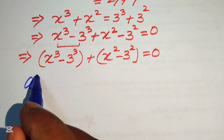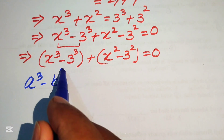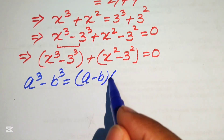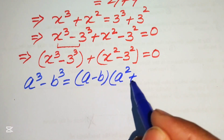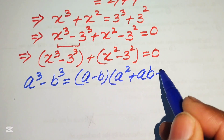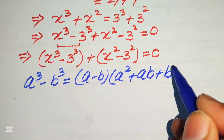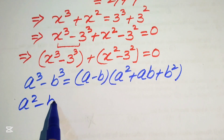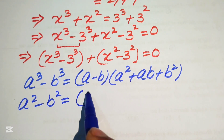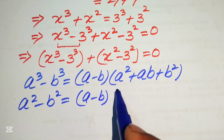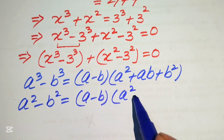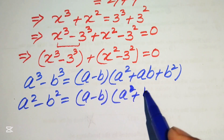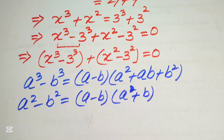We recall the two identities: a cubed minus b cubed equals a minus b times a squared plus ab plus b squared. Similarly, a squared minus b squared equals a minus b times a plus b. We will apply both of these formulas to the grouped equation.